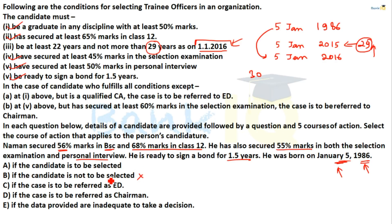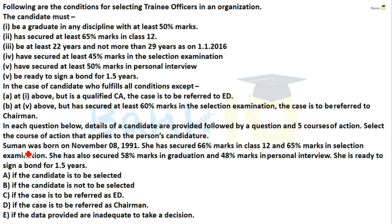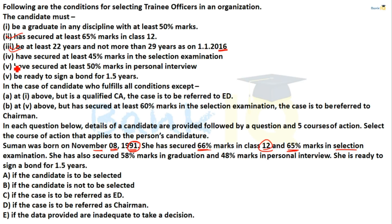Next question: someone was born on 8th November 1991. From 1991 to the reference date is around 25 years — condition satisfied. She has secured 66% marks in 12th — satisfied. And 65% marks in selection examination — also satisfied.